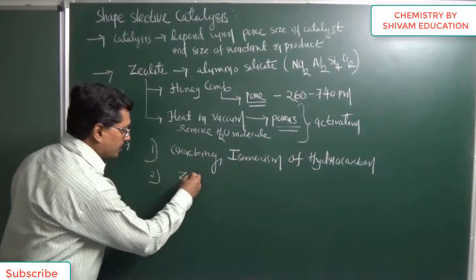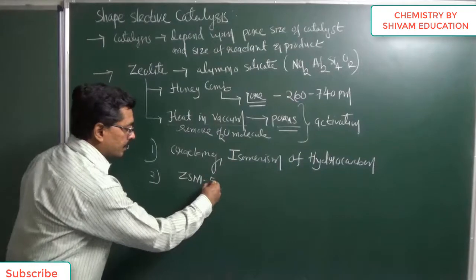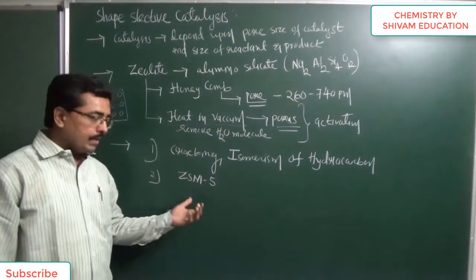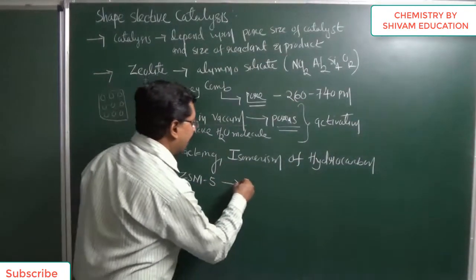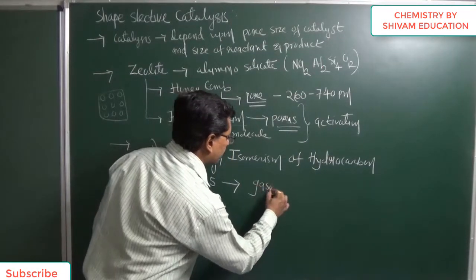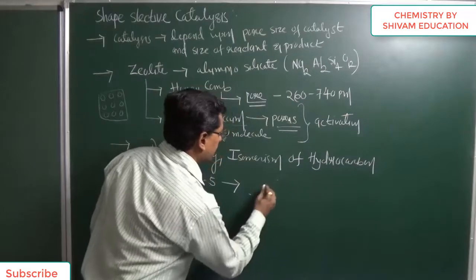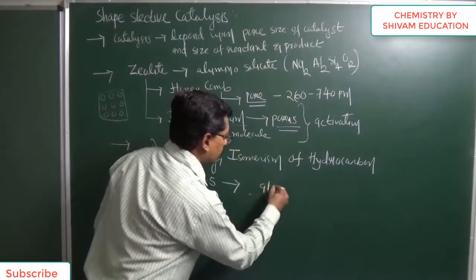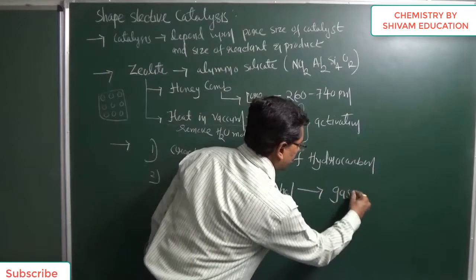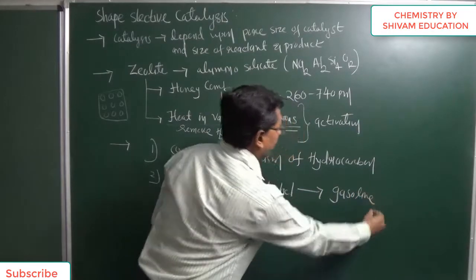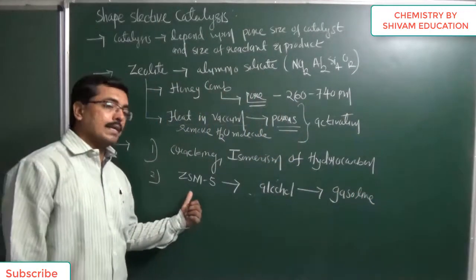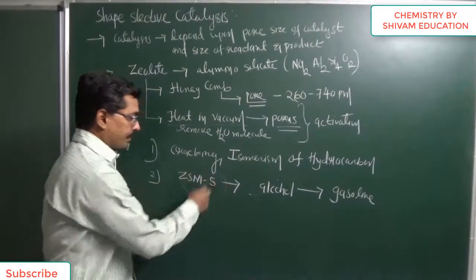One of the most important zeolites is ZSM-5. It is observed that ZSM-5 is used for the conversion of alcohol into gasoline. So one can obtain a petroleum product from alcohol by using the zeolite known as ZSM-5.